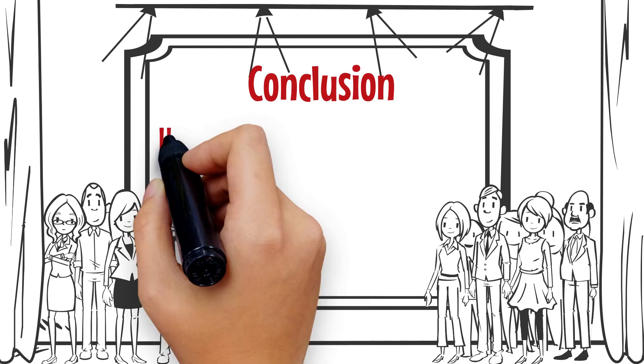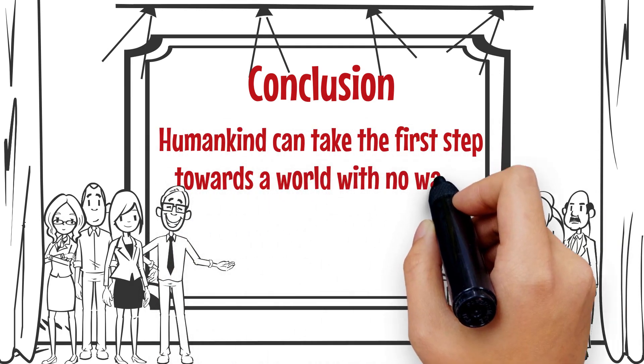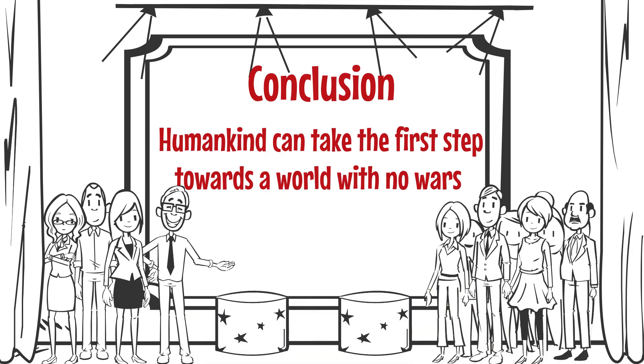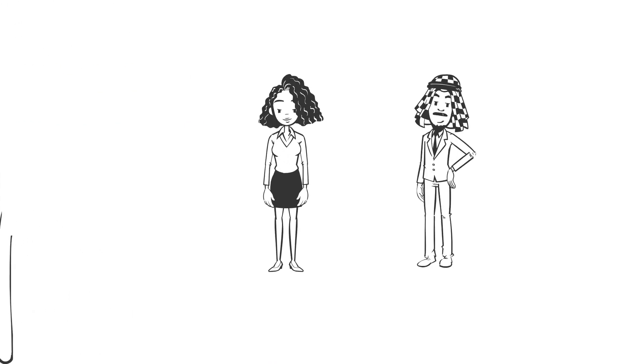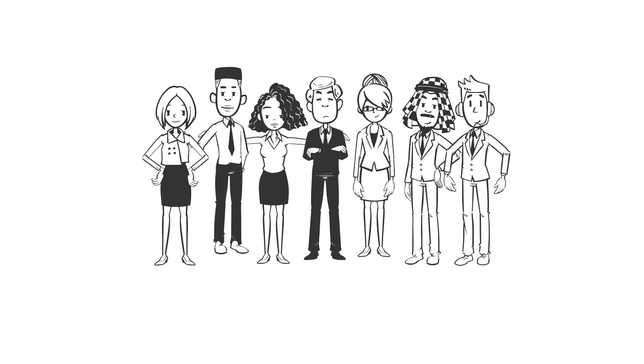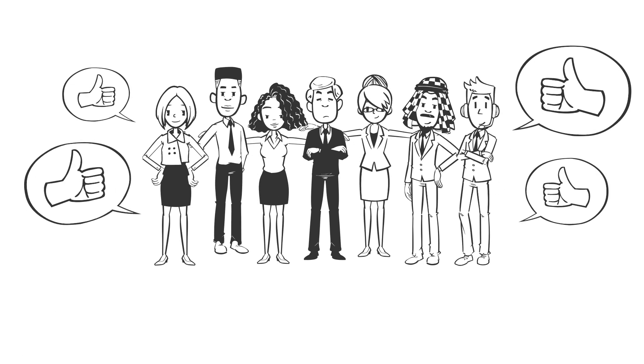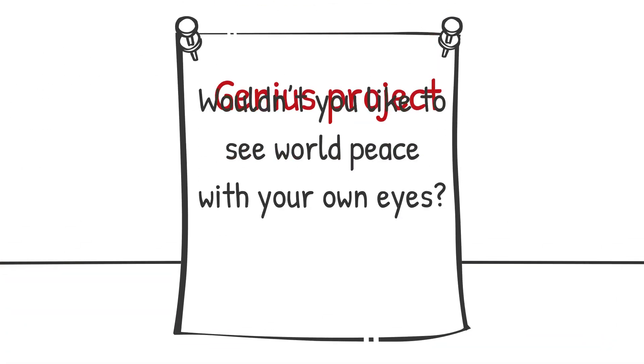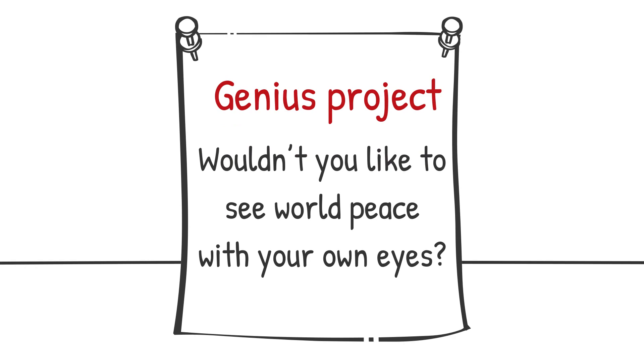In conclusion, with one trillion yen, no, with just the first 10 billion yen, humankind can take the first step towards a world with no wars. The Genius Project can establish world peace. If you know anyone who will be willing to give 10 billion yen for world peace, willing to pay one trillion yen to end war, please let them know about the Genius Project. The method and answer to world peace is right here. Wouldn't you like to see world peace with your own eyes? Might as well, right?